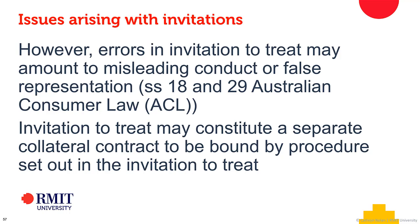Sections 18 and 29 are a really good place to start. The way those sections work is that an invitation to treat, or the terms set out in one, may in fact become a collateral contract — a side contract — which requires the person making the invitation to be bound by the procedures they set out, even though those terms don't form part of the main contract. For example, if you state in an invitation to treat that you will sell at a lower price to the first 500 customers, you will be bound by the Australian Consumer Law to keep a record of who those first 500 customers are and sell to them at that lower price.